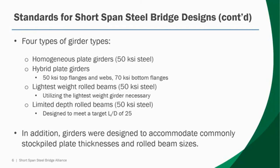For each of those different iterations, four different girders were designed. Two plate girder options: one being a homogeneous plate girder that utilizes 50 KSI steel throughout, another being a hybrid option that utilizes 50 KSI top flanges and webs but 70 KSI bottom flanges. There were also two rolled beam options: one being the lightest weight, which utilizes the lightest rolled beam section that can safely resist the loads, as well as a limited depth option designed to meet a target L/D of around 25 for situations with clearance issues or hydraulic opening requirements.